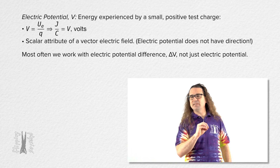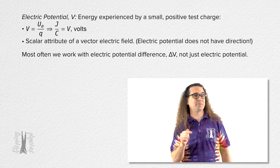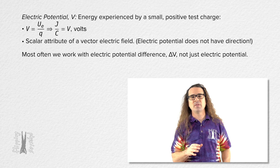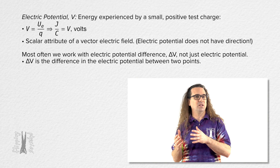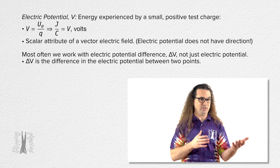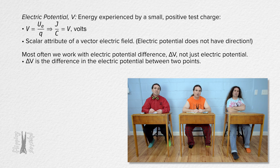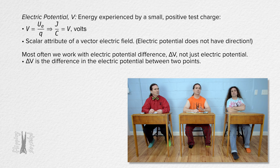Most often we are interested in the electric potential difference, not just electric potential. Electric potential difference is the difference in electric potential between two points. It could be called change in electric potential, but we call it electric potential difference. Electric potential difference is better because it is a difference in the electric potential values at each location, regardless of whether a charge actually moves through that difference or not — nothing has to go through a change in electric potential; the electric potential difference is just always there.